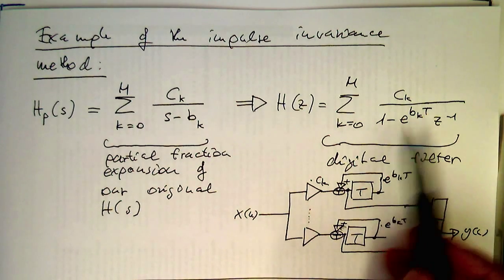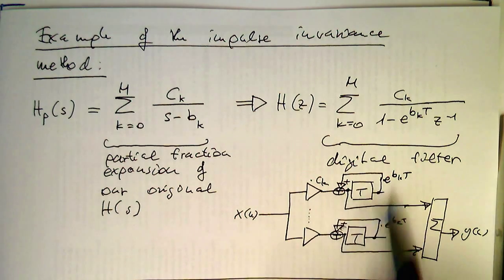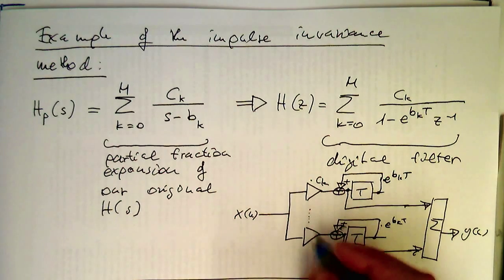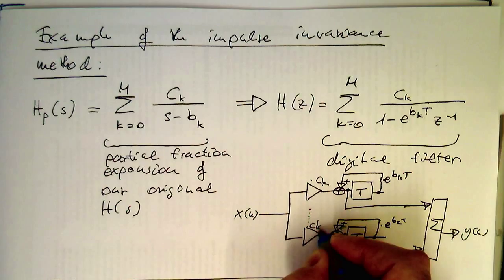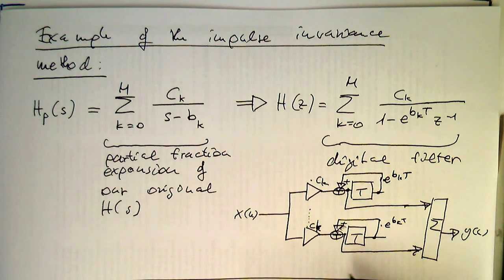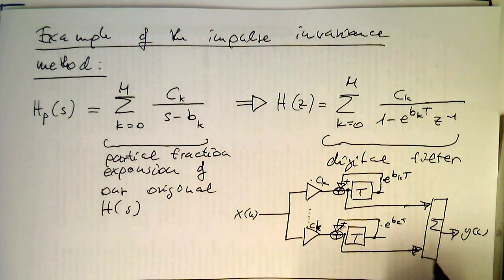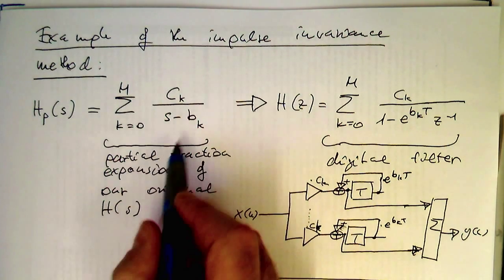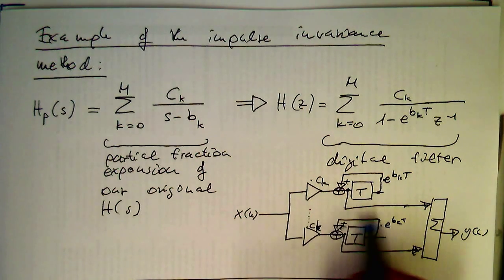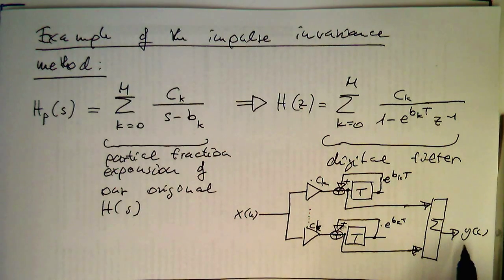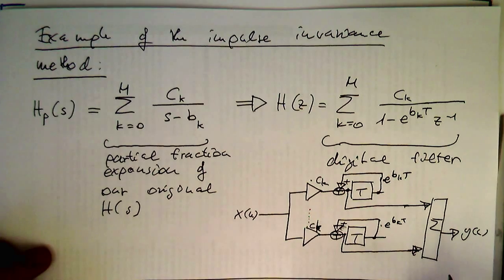Essentially, every one of these poles generates a first-order recursive filter, and then these are added up. This is more of theoretical interest, because usually these B_K values are complex numbers, so these become complex recursive filters, and only the output becomes real again. From a practical point of view this doesn't help much, but just to show how it works before we progress to a more practical solution.